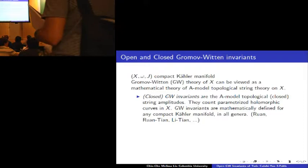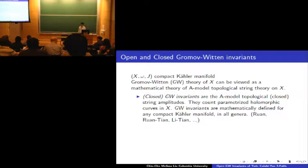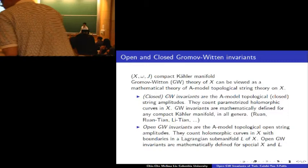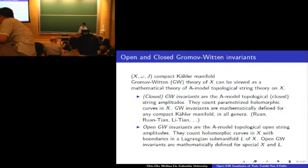These Gromov-Witten invariants are mathematically defined for any compact symplectic manifold in all genera. On the other hand, open Gromov-Witten invariants are the A-model topological open string amplitudes. They are supposed to count holomorphic curves in X with boundaries in a Lagrangian submanifold L of X. L can be possibly disconnected. Open Gromov-Witten invariants are mathematically defined only for special X and L.